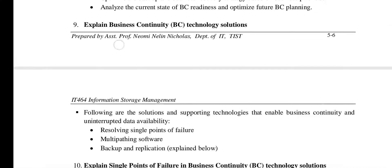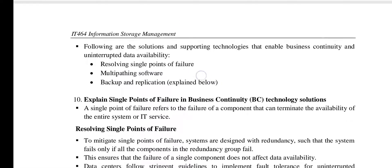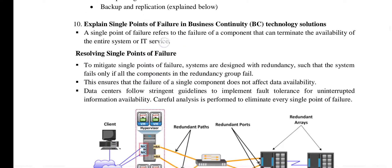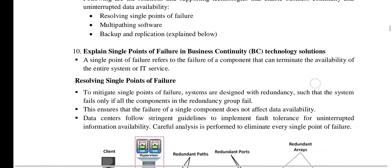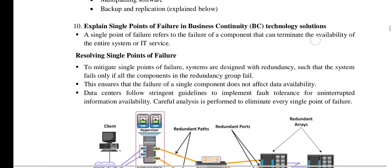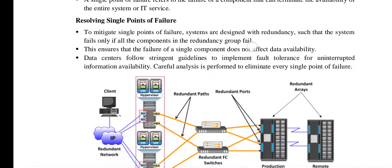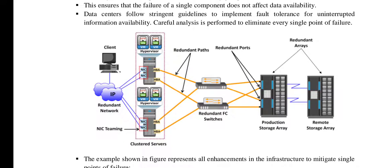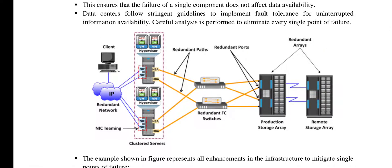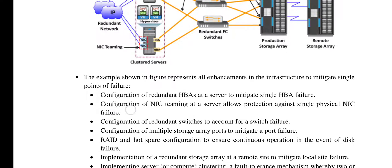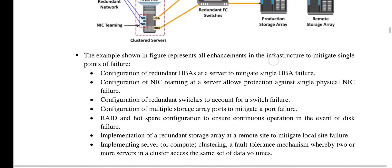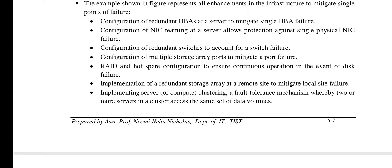Business continuity technology solutions include three main approaches: resolving single point of failure, multi-pathing software, and backup and restore. To resolve a single point of failure, redundancy must be created for all components — including redundant networks, redundant parts, redundant FC switches, redundant ports, and redundant arrays for storage. This includes configuring redundant HBAs, NICs with teaming at the server, and redundant switches.